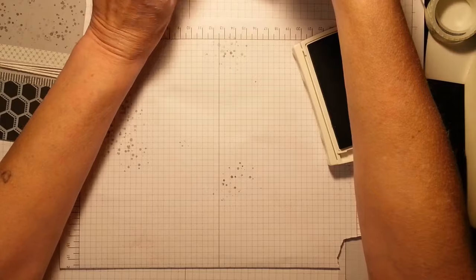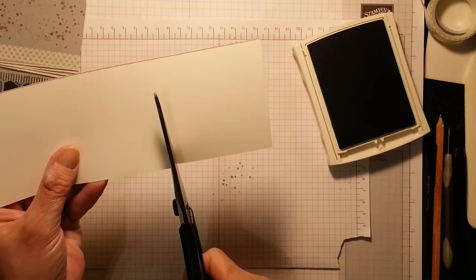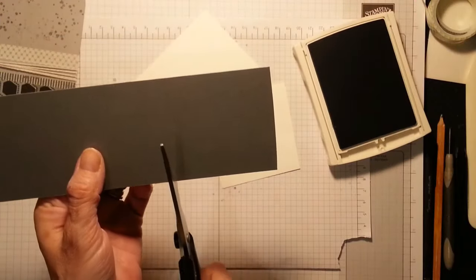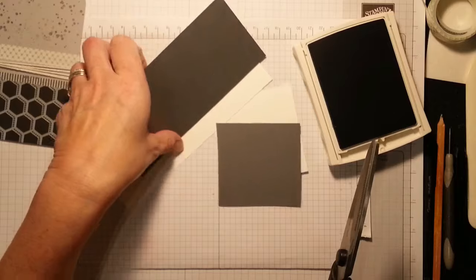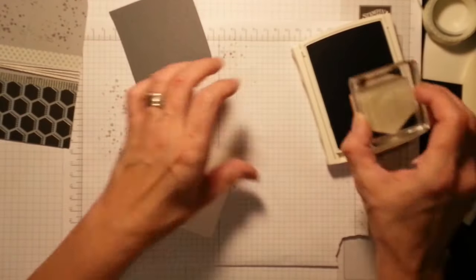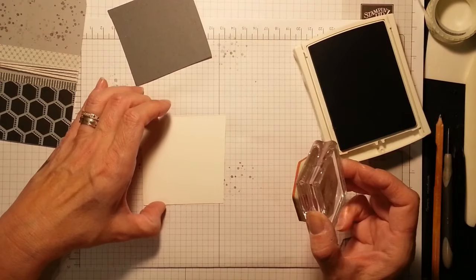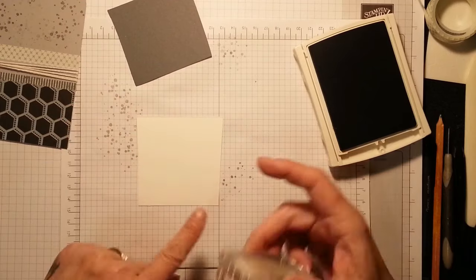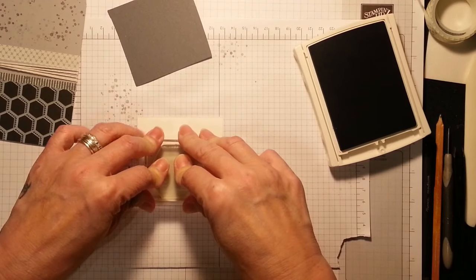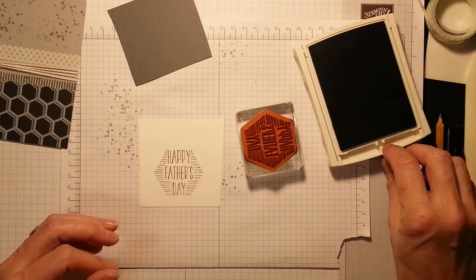So I'm going to fetch in a piece of scrap whisper white and also a scrap piece of the basic grey. That's all you need for this. And I'm going to fetch in my happy father's day. I have got a die to cut this one out, but I'm going to fussy cut because it's quick, quicker than getting out the big shot. I'm also going to fussy cut the grey out to match but give it a border.